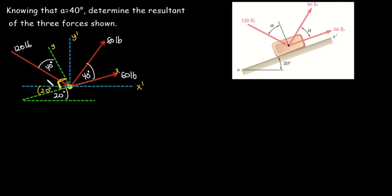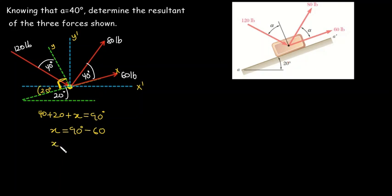The sum of all angles must equal 90 degrees, so we have 40 plus 20 plus angle x equals 90 degrees. Therefore angle x equals 90 minus 60, which gives us 30 degrees. This angle here is 30 degrees. Also, the opposite angle to the 20-degree inclination is also 20 degrees. That's all we need. I'm going to redraw the whole system on the new plane we have defined.